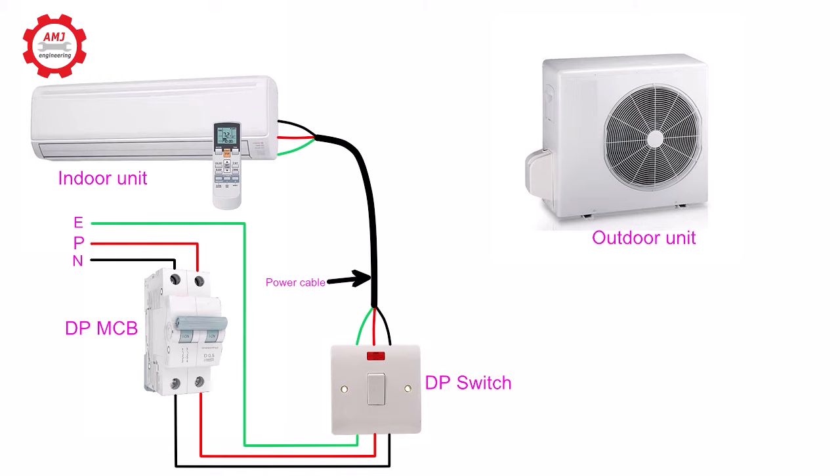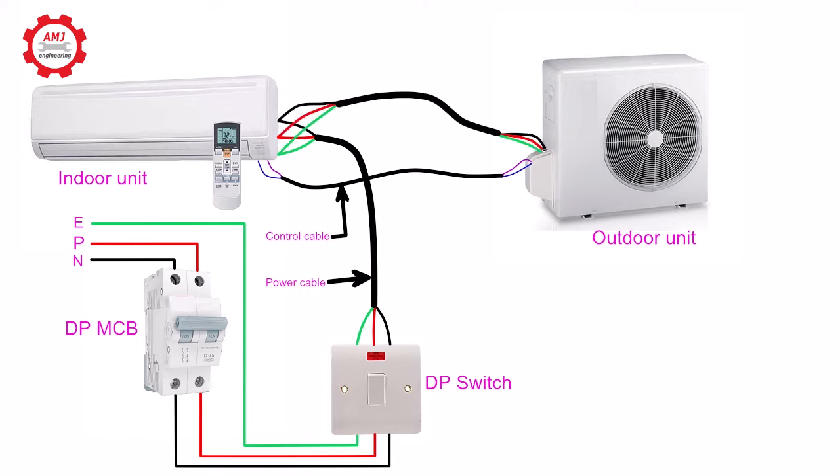There are two cables connected between the outdoor unit and indoor unit of the split AC. The control cable contains two wires and the power cable contains three wires. The power lines first go to the indoor unit, and the power supply is given to the outdoor unit from the indoor unit.